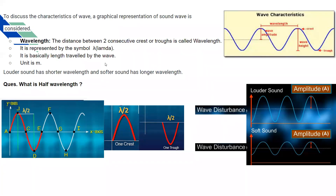The unit of wavelength is meter, because it is a length. If the wavelength is shorter, a louder sound is created. If the wavelength is longer, a softer sound is created. Half wavelength means: if we take the center point of the crest and the center point of the trough, and measure the distance between them, that is known as the half wavelength. So one crest or one trough alone is equal to the half wavelength.